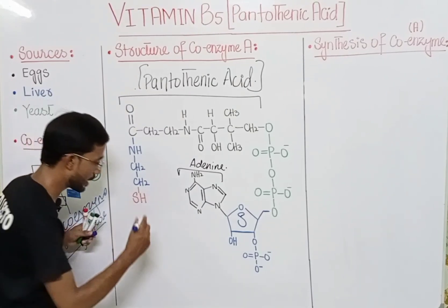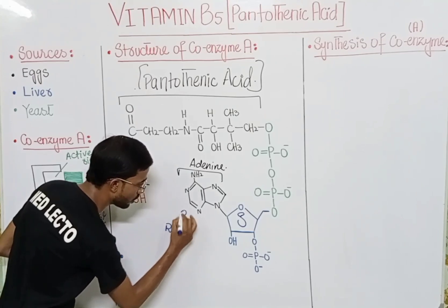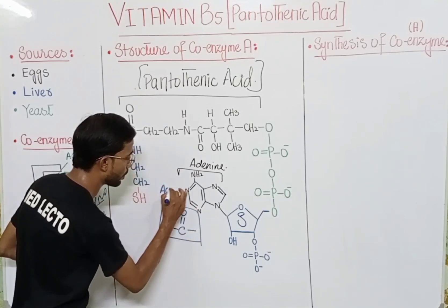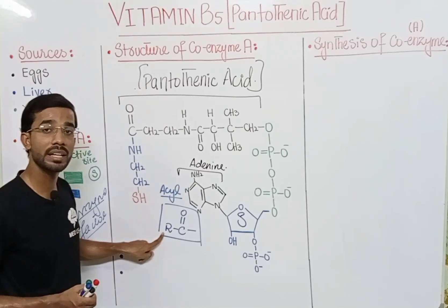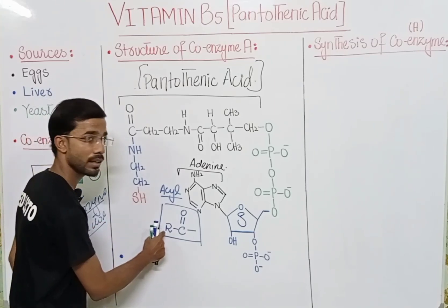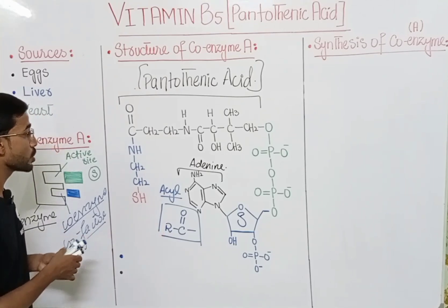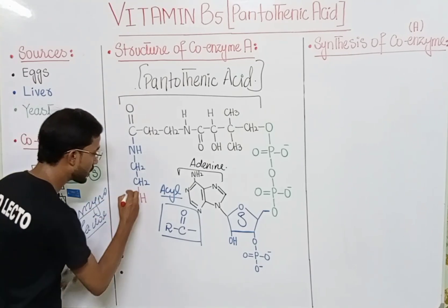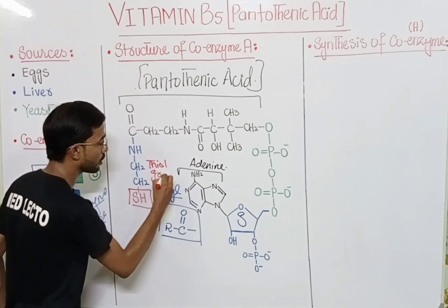An important function of Coenzyme A is the transfer of the acyl group from one compound to another. The acyl group has the structure R-C=O, where R is for alkyl — meaning different carbon chains can attach at the R side. The most important component of Coenzyme A is actually the thiol group, also called the mercapto group, which is the functional group.